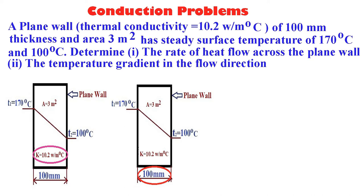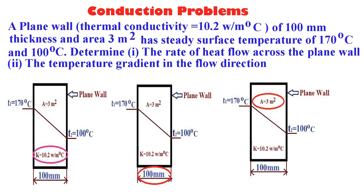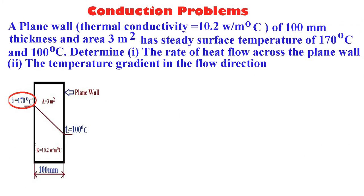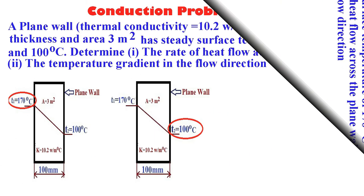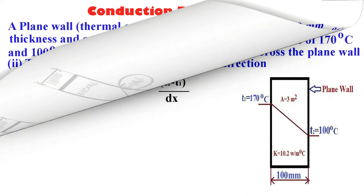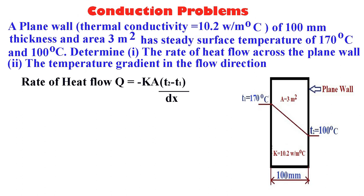Clearly observe in the diagram. The surface area A is equal to 3 meter square. We consider a plane wall like a furnace. Inside temperature T1 is equal to 170 degrees centigrade and outer surface temperature T2 is equal to 100 degrees centigrade. In this problem we determine: first, the rate of heat flow across the plane wall, and second, the temperature gradient in the flow direction.